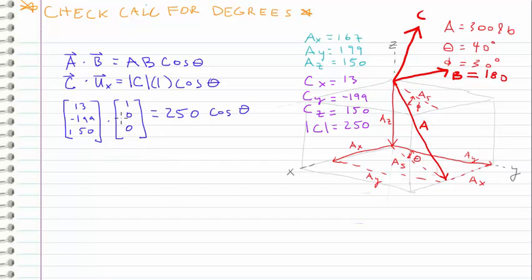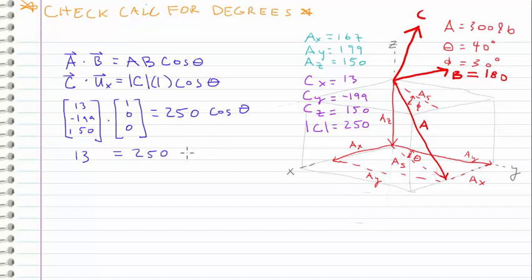When you do dot products between vectors, you multiply the components and then add them together. So we have 13 times 1 plus negative 199 times 0 plus 150 times 0, so we're left with just 13. And this equals 250 times cos theta. Rearranging, we have inverse cosine of our small component over the magnitude, and this is for X. And this angle comes out to 87 degrees.